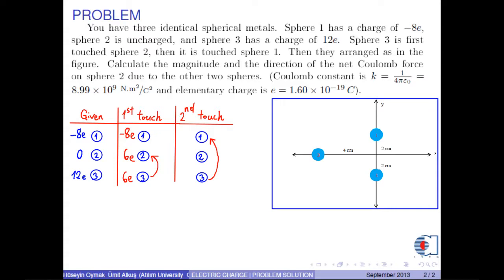After the second touch, the total charge of Sphere 1 and 3 is shared equally between each sphere. Namely, they would be equal to Q1 plus Q3 over 2. Q1 is negative 8e and Q3 is 6e. Therefore, we write negative e for Sphere 1 and 3. And Sphere 2 remains constant.